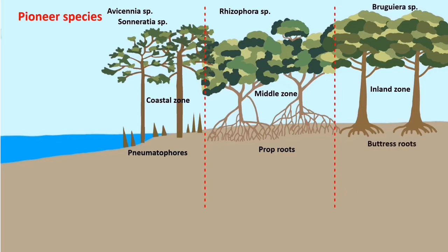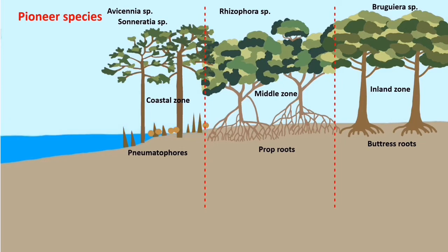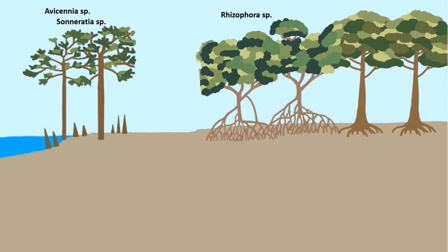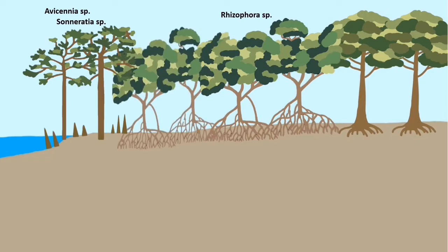During high tide, the water brings along mud and organic substances. When the tide recedes, the enlarged root system and pneumatophores trap the mud and organic substances. As a result, mud accumulation slowly begins, causing the soil to become higher and denser, and Rhizophora species succeeds and replaces the pioneer species.